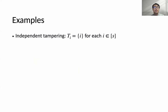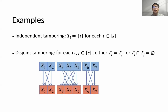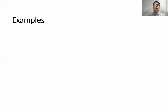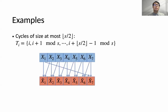For example, cover-free tampering contains independent tampering, and it also contains joint tampering, where sources are divided into at least two groups and the sources in each group are tampered together. Also, cover-free tampering is strictly richer than joint tampering, as it contains some more complex tampering functions. For instance, the tampering of each X_i can depend on both X_i and X_{i+1}, which is not joint tampering but is cover-free since X_i is not tampered together with X_{i+2}.